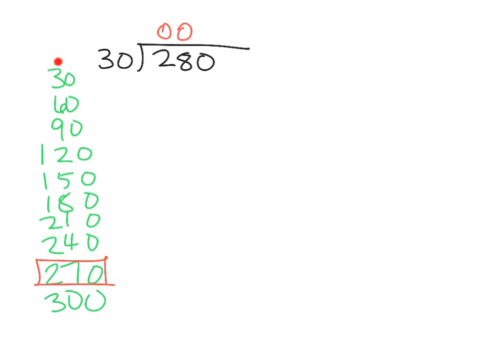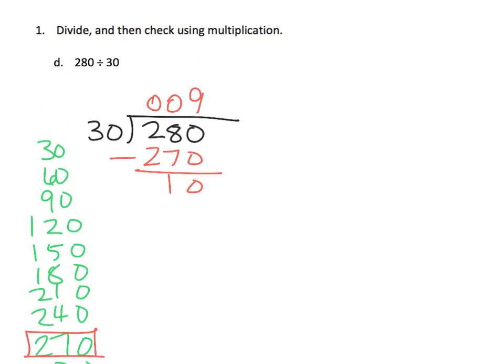I can see that it's 1, 2, 3, 4, 5, 6, 7, 8, 9. So 30 × 9 gives us 270. And I can subtract. I get a remainder of 10. So we're going to write 9 remainder 10.